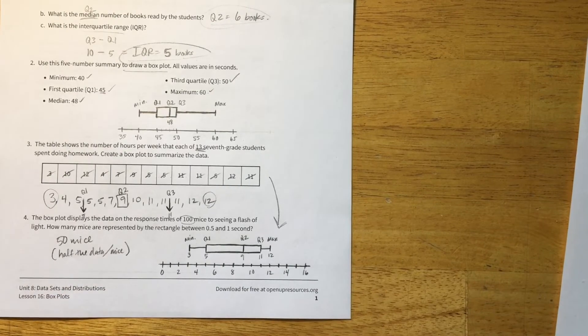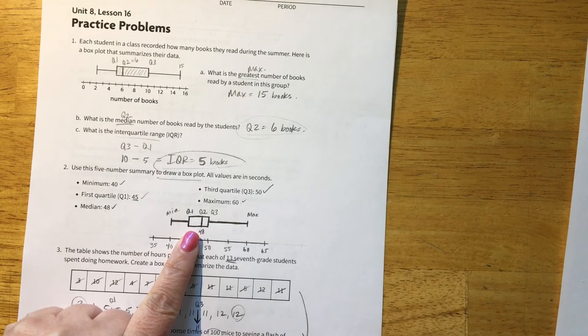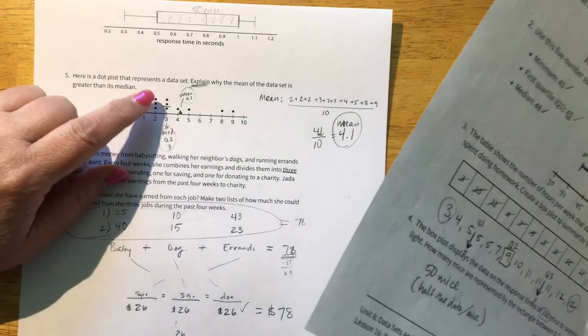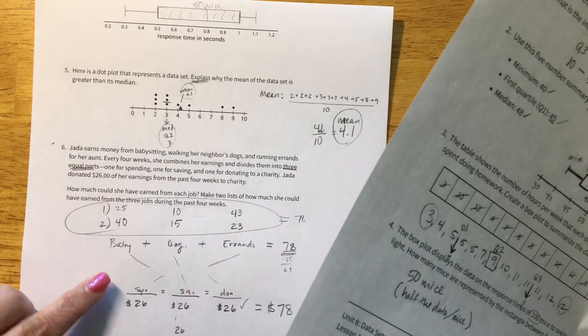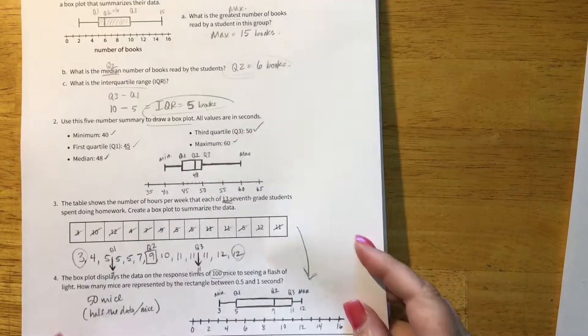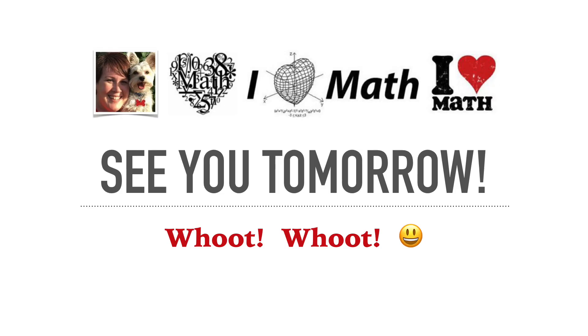I hope you did well and understand box-and-whisker plots, interpreting data from them, and the dot plot and money math review. Good job on this homework assignment. Now go ahead and dive into your check-your-understanding quiz in Canvas. Do your best because you deserve your best.